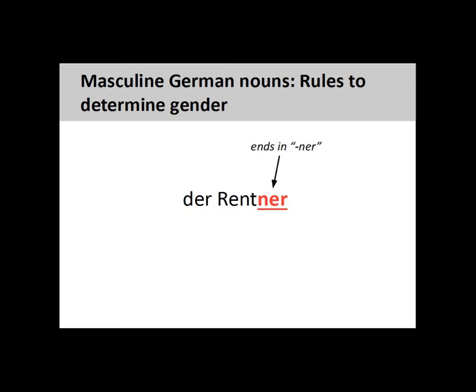Nouns ending in -NER, such as 'Rentner' (pensioner), are masculine. We'll see a way to form a feminine version of these nouns in a later presentation.